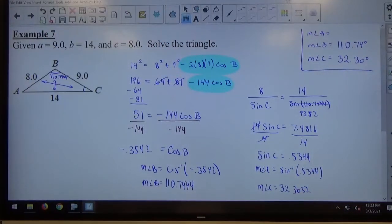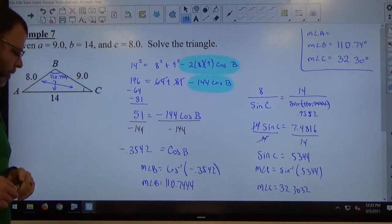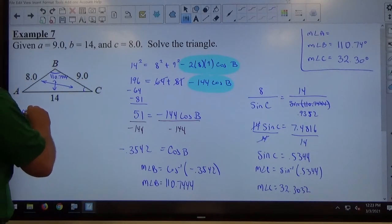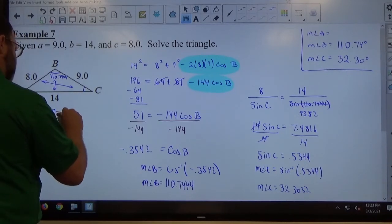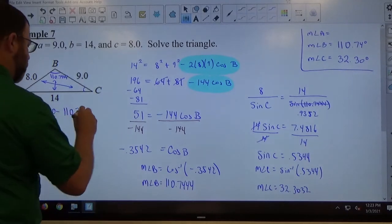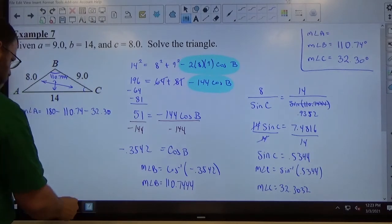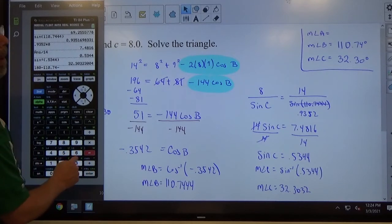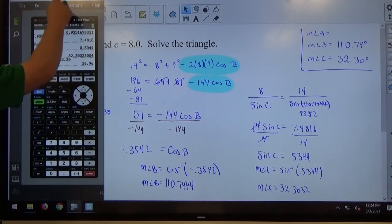Now when I go to find angle A, angle A is simply 180 minus the two angles we already know. And adding and subtracting a couple decimal places, I don't need to worry about the four decimal place approximations for that. So I'm going to say measure of angle A is equal to 180 - 110.74 - 32.30. So 180 - 110.74 - 32.30 comes out to 36.96.